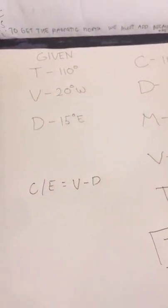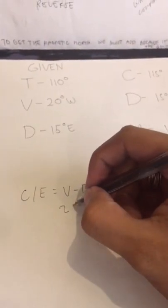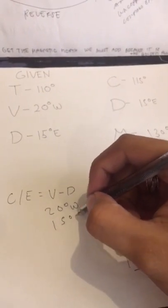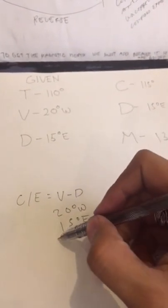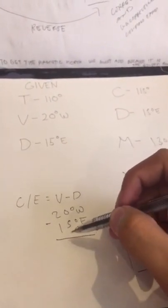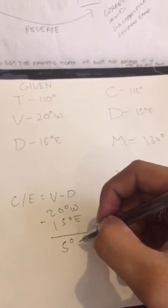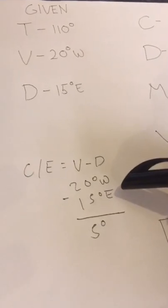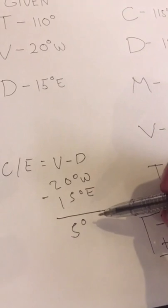Our deviation here is 15 degrees west. To get the answer, we need to minus: 20 degrees west minus 15 degrees east equals 5 degrees. And if the number was bigger, we get the name — so 5 degrees west.